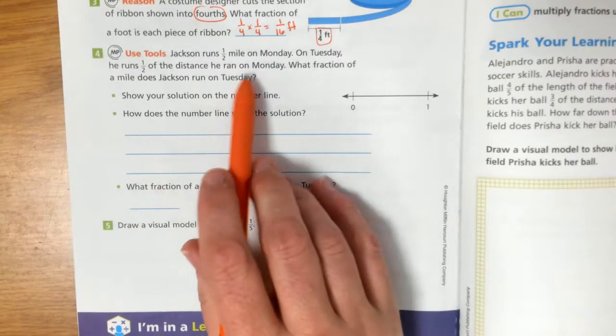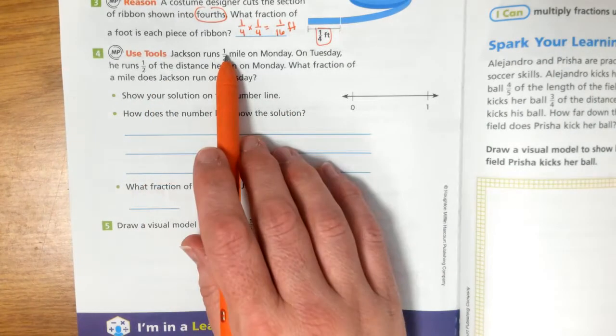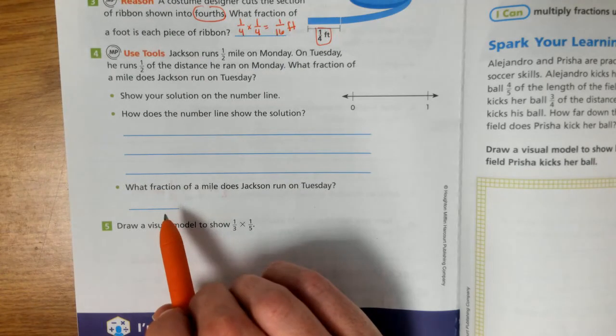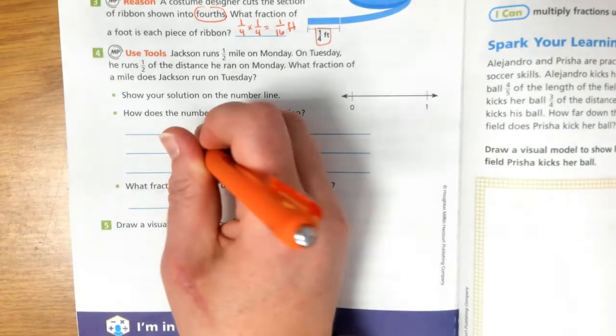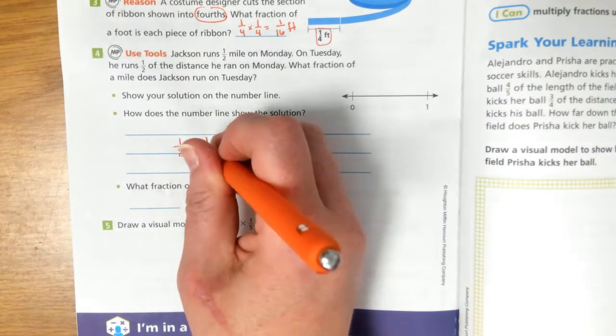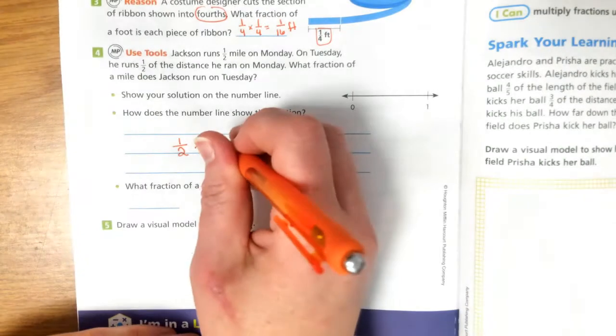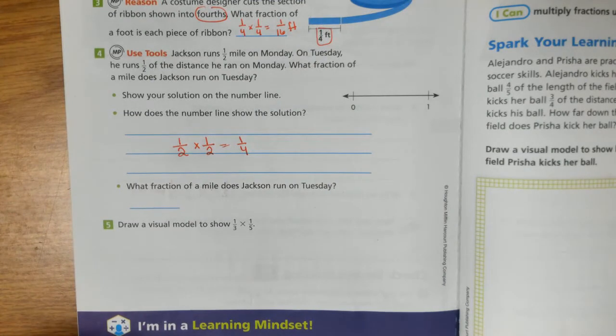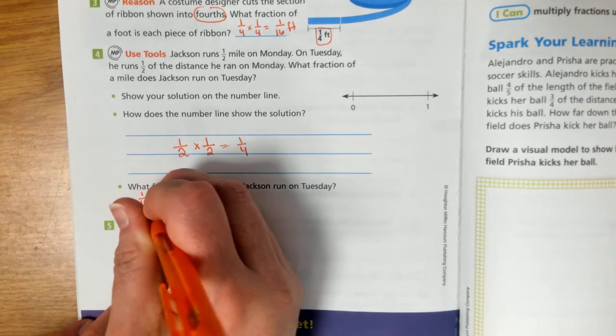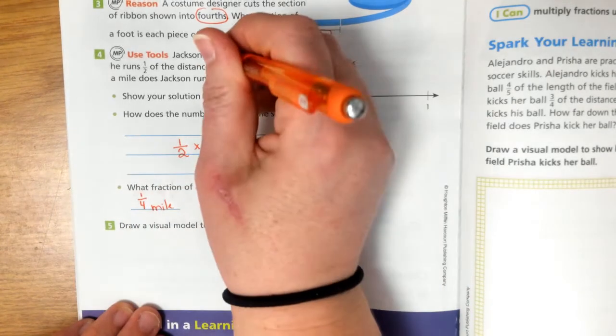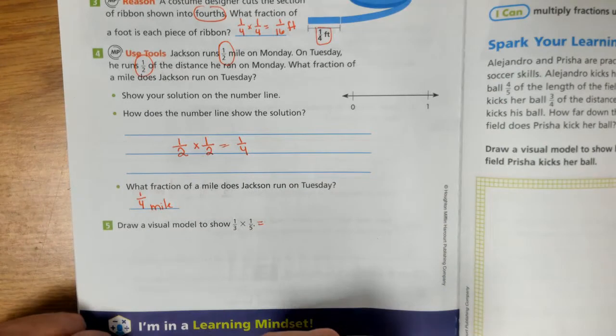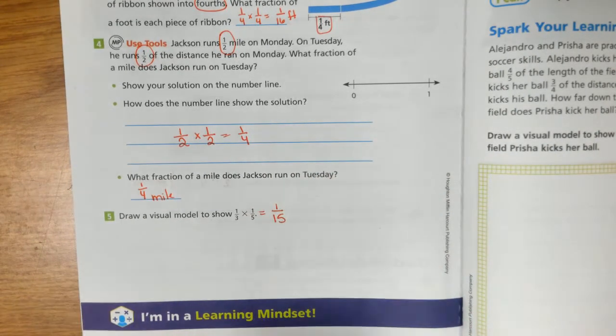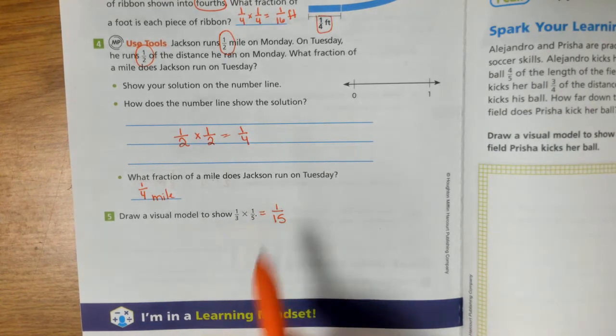Jackson runs half a mile on Monday. On Tuesday, he runs half the distance he ran on Monday. What fraction of the mile does Jackson run on Tuesday? So if he runs one-half on Monday, and he runs half of that on Tuesday, then he runs one-fourth of a mile on Tuesday. So you're just multiplying again one-half times one-half. And then here, you don't have to draw your visual model. One-third times one-fifth equals one-fifteenth. So you multiply your top numbers, your bottom numbers.